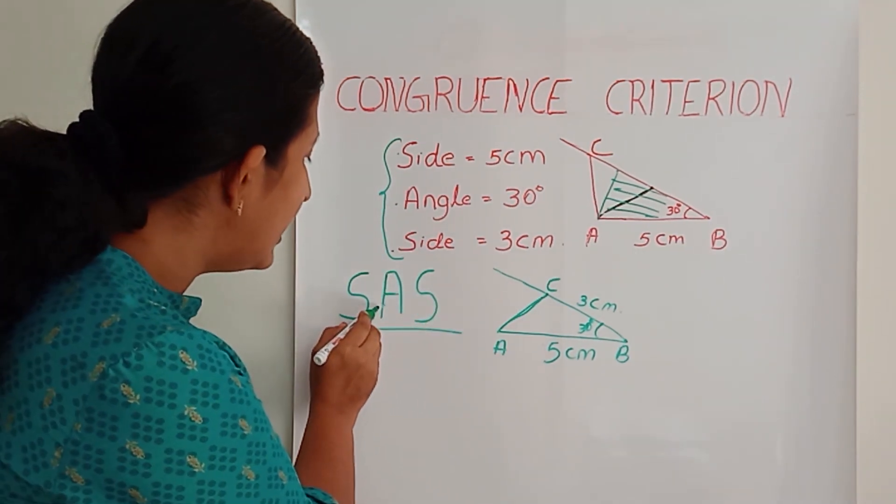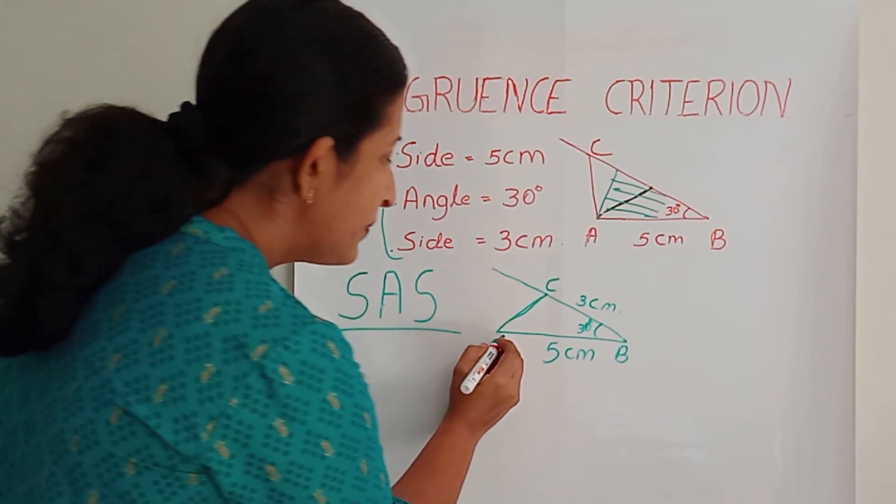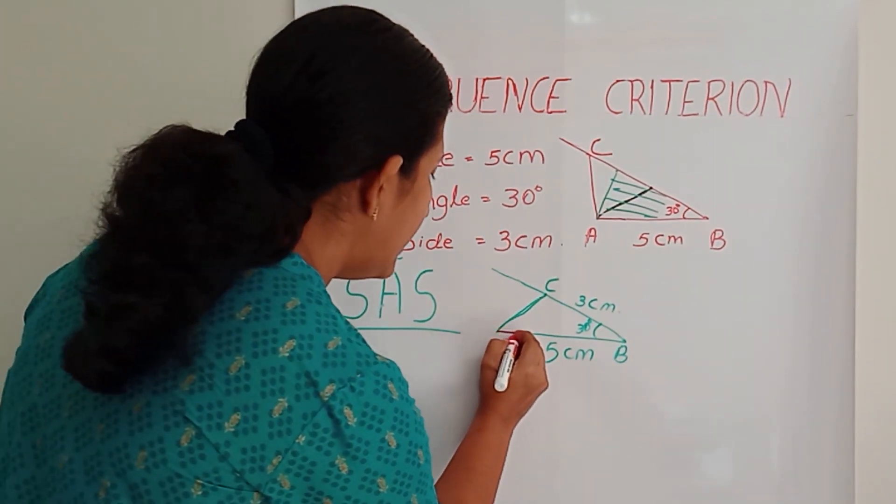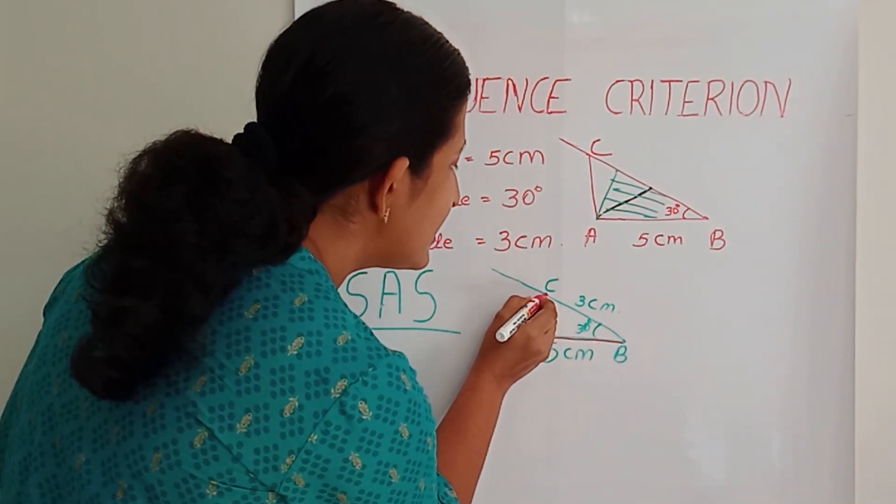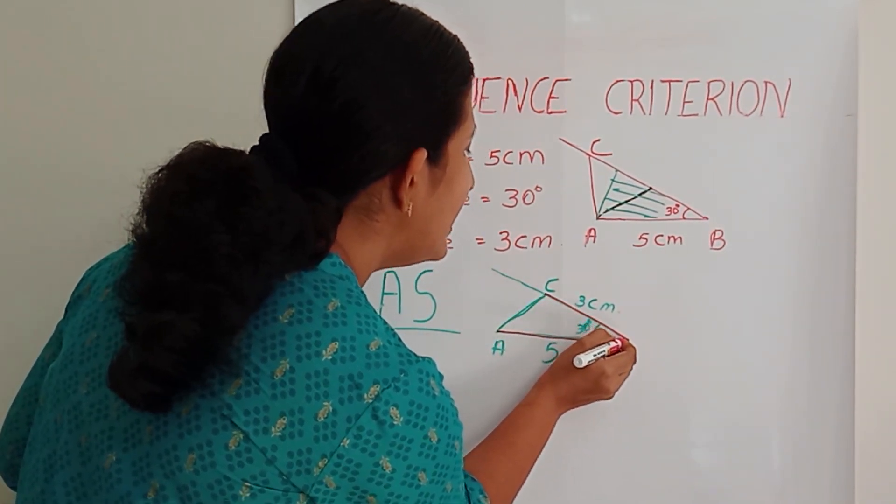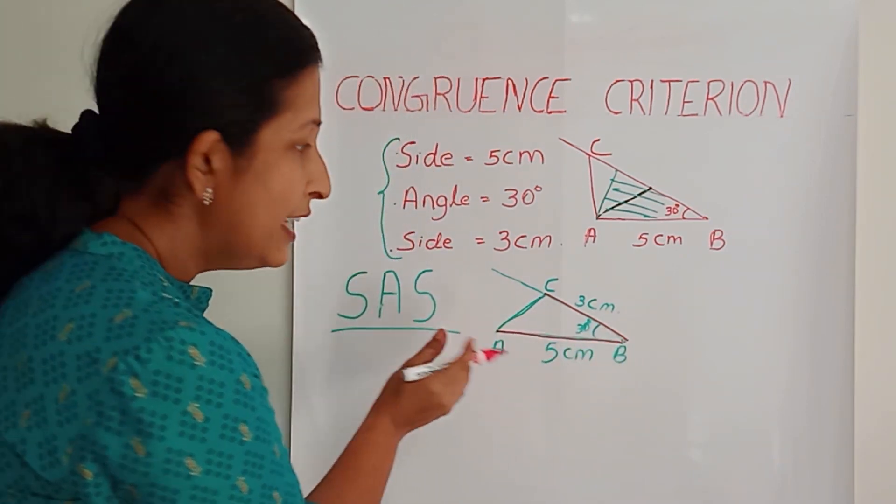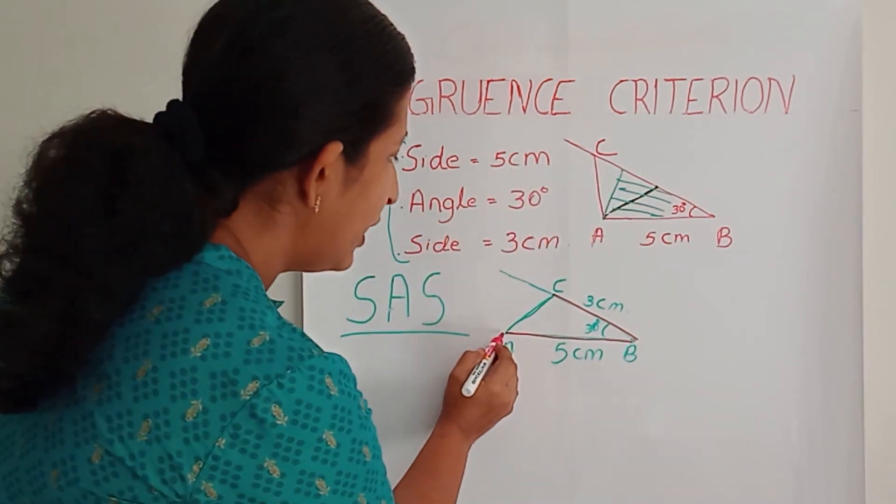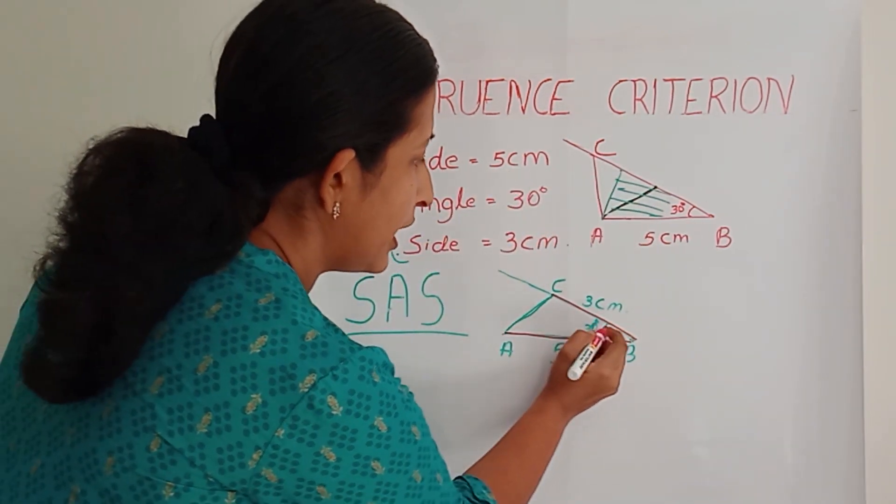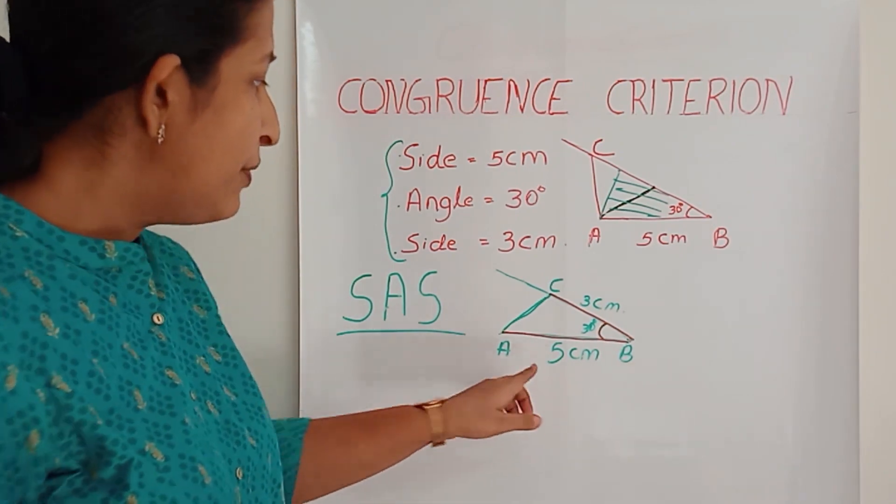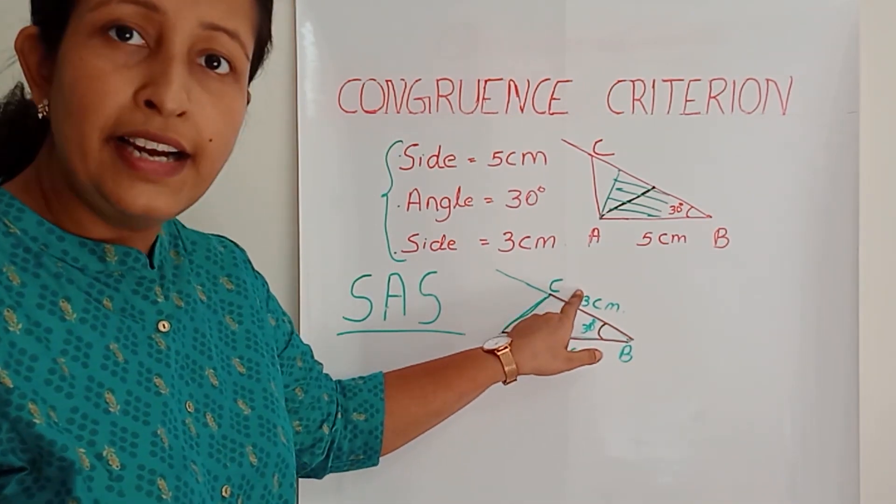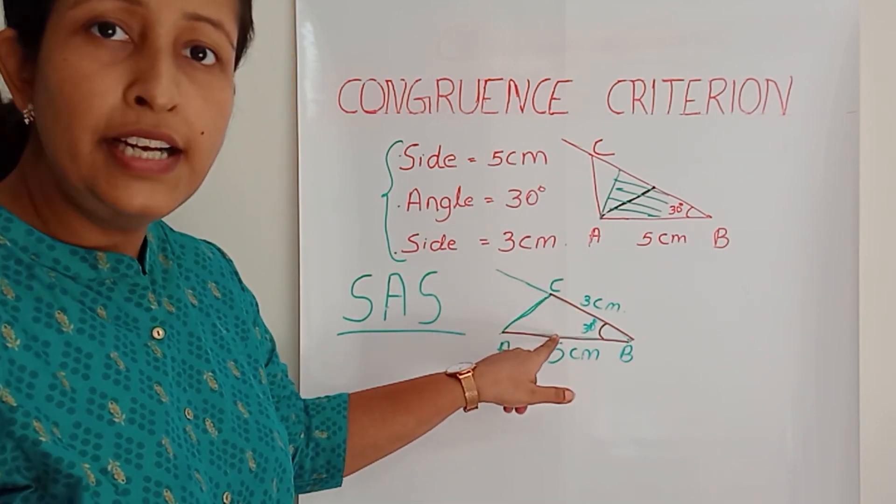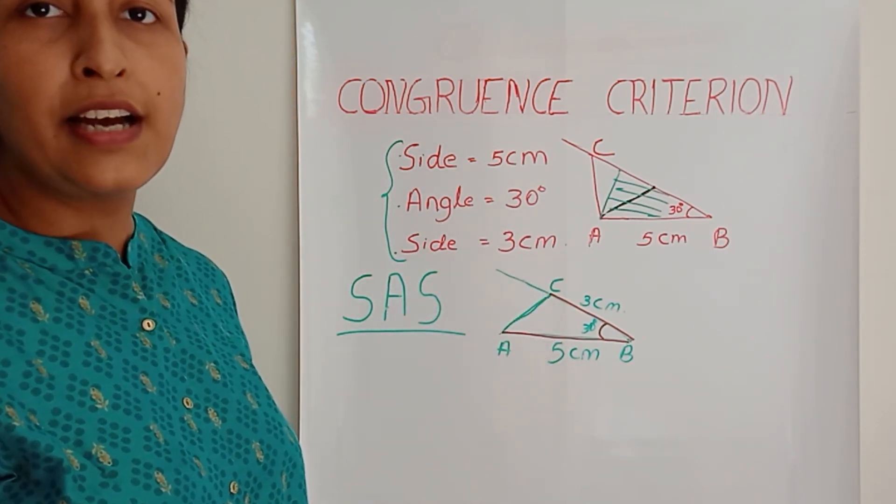What is the speciality of this angle? See, one side is AB and the other side is BC. What is the speciality of this angle? This is the included angle, included angle of these two sides. So if we are getting two sides and the included angle between these two sides, definitely we can draw a congruent triangle.